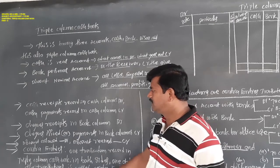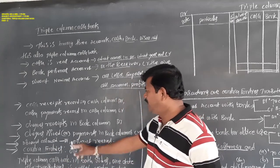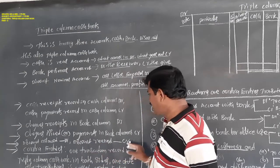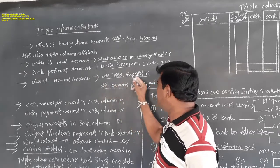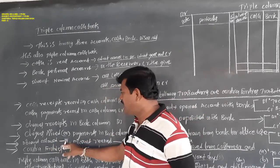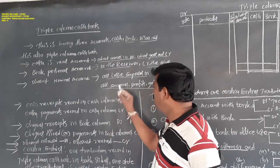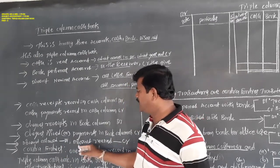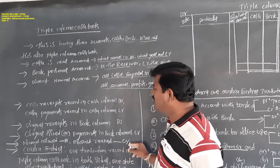Discount allowed is on the debit side. Discount received is on the credit side. As per the nominal account principle, all expenses and losses go to the debit side; all incomes and profits go to the credit side. So discount allowed must be on the debit side and discount received must be on the credit side.